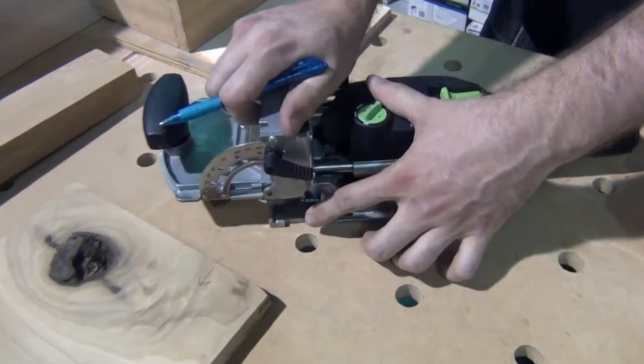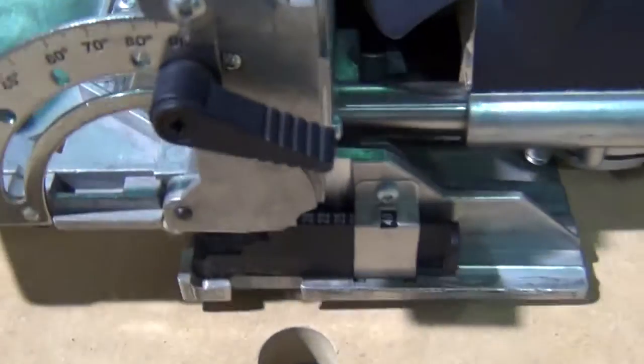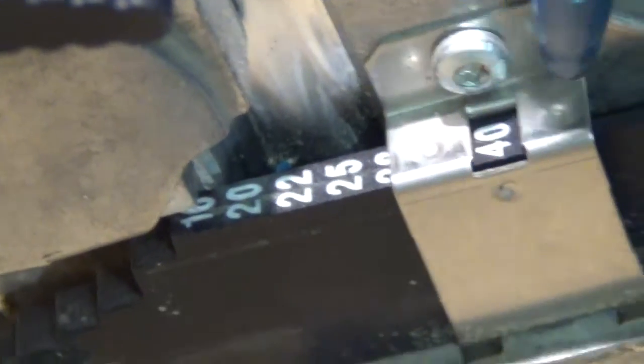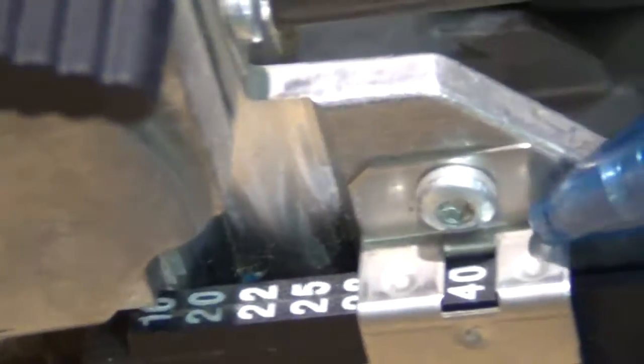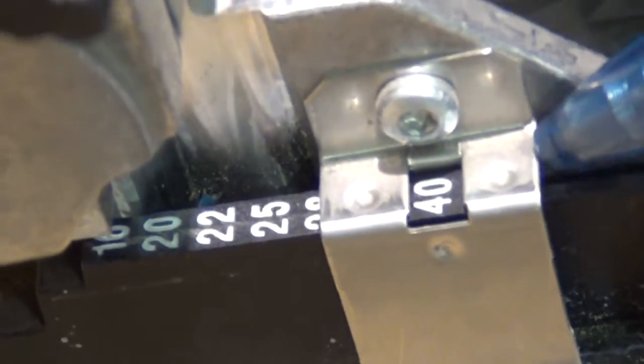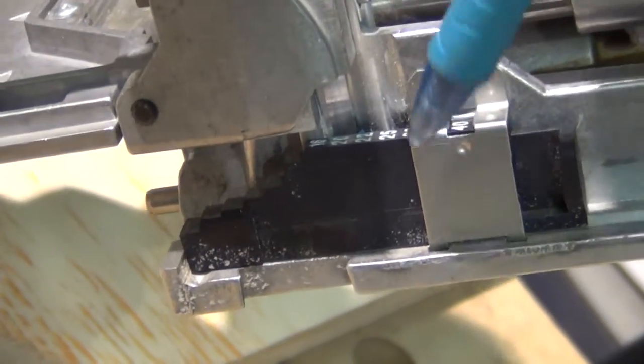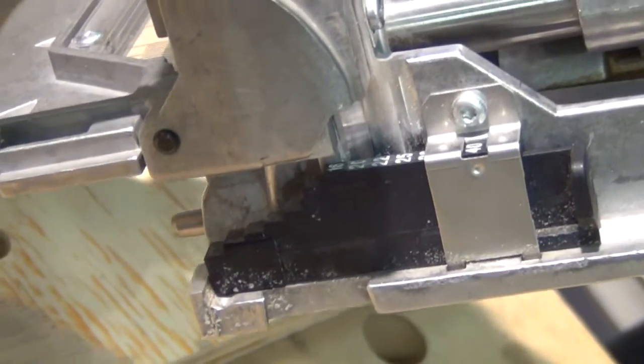This one is actually telling you the thickness of the board that you're going to go into half of. So this would mean that you're going to go in the middle of a 40 millimeter thick board. So this is actual depth. This is the thickness of the piece you're cutting into.